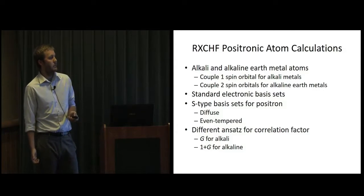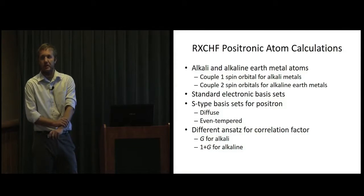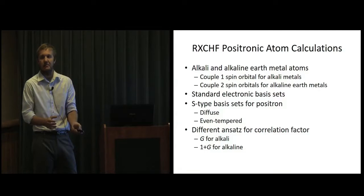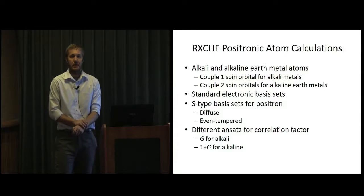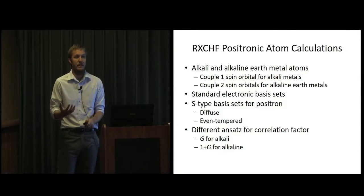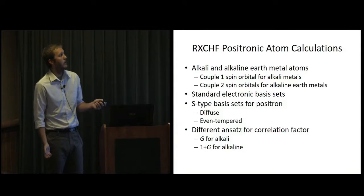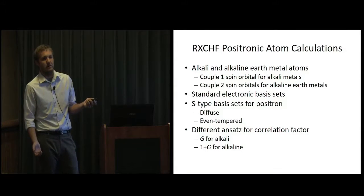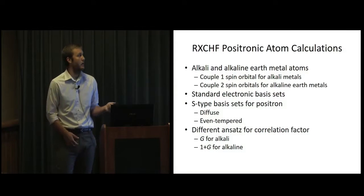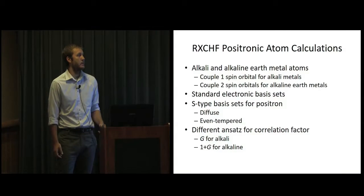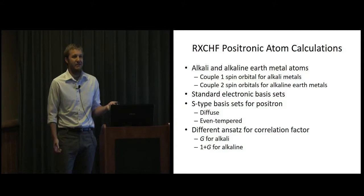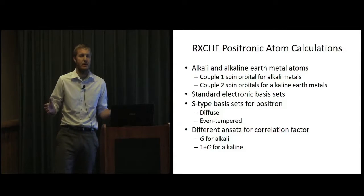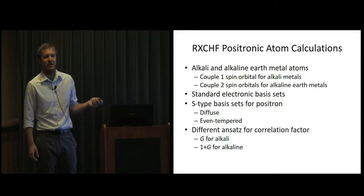So for benchmarking, we really want to look at positrons binding to molecules, but we're going to start with atoms since we have high-quality data there. So we're going to look at the alkaline and alkaline earth metal atoms because that's where that SVM or explicitly correlated Gaussian data was that's very high-quality. For the alkaline metals, we're going to couple one spin orbital because there's one valence electron. For the alkaline earth metals, we're going to couple two spin orbitals because there's two valence electrons, standard electronic basis sets. For the positron, we're going to use an S-type basis that's even-tempered. It's just exponentially spaced. This comes from Klaus Rudenberg in the 70s. And it's really pretty diffuse.